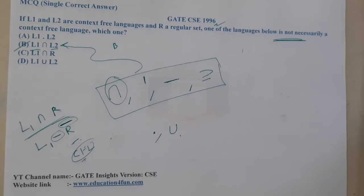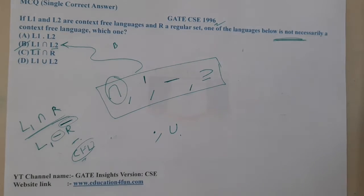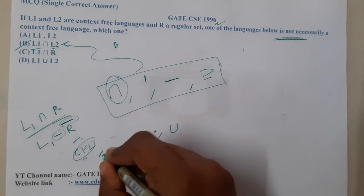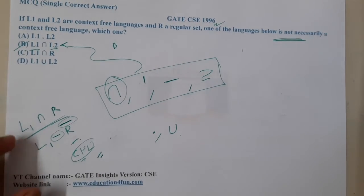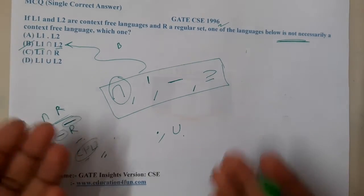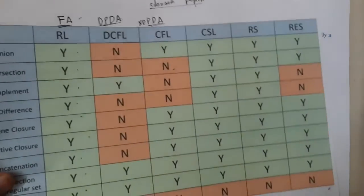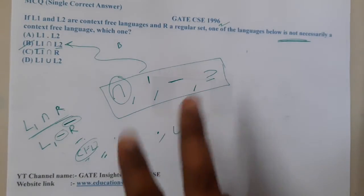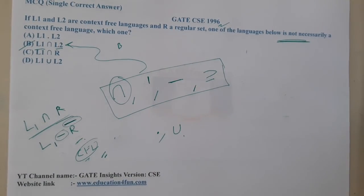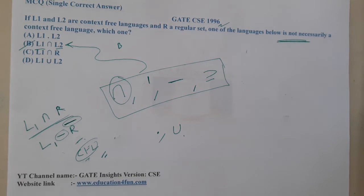They conclude that L1 intersection R can be a CFL, but I am not entirely clear on how exactly this works when two different types of languages are involved. If any student has a clear idea about this, please share a video or resource in the comment section. I am clear with conversions when both languages are the same, but when they are different I get confused.